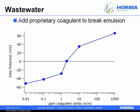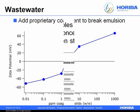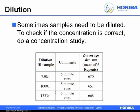Sometimes people want large zeta potential values (for stability) and sometimes small values (to break emulsions). Measuring the effect of additives on zeta potential is really the way this technique should be used. Regarding dilution: sometimes you need to dilute samples for particle size or zeta potential measurement. If you pay attention to continuous phase ions, that's usually not a problem. A concentration study confirms that measured size doesn't change significantly with concentration — across three concentrations the size barely varies, so you take the average and move on.